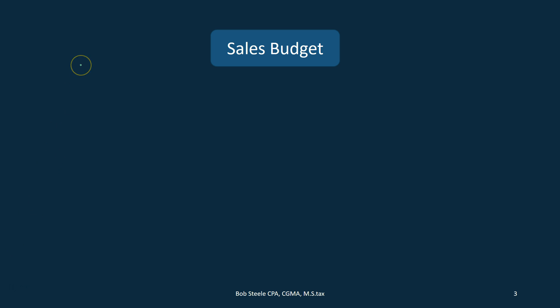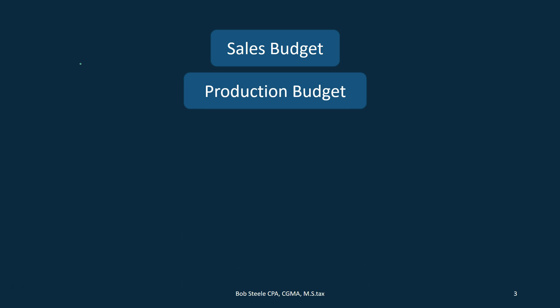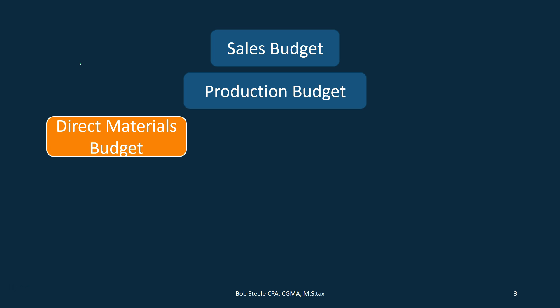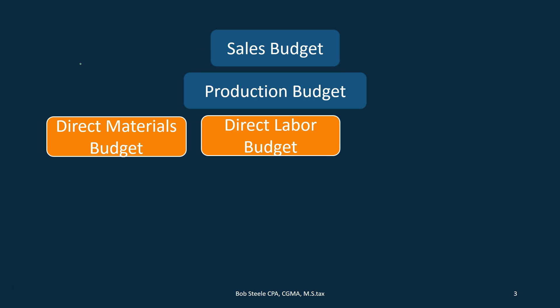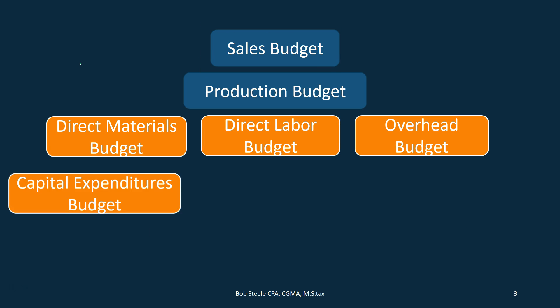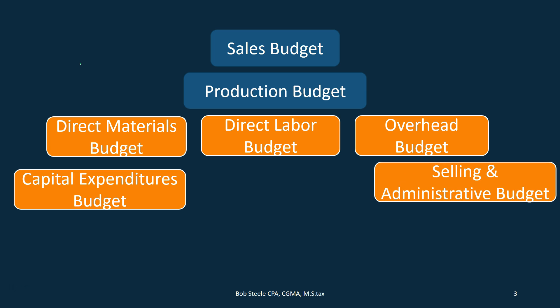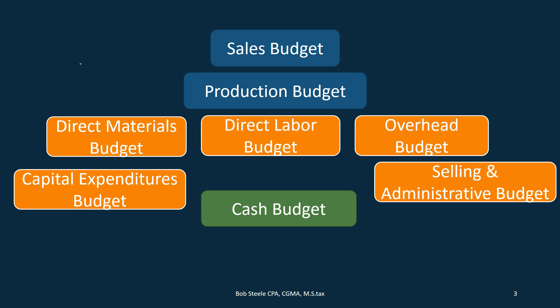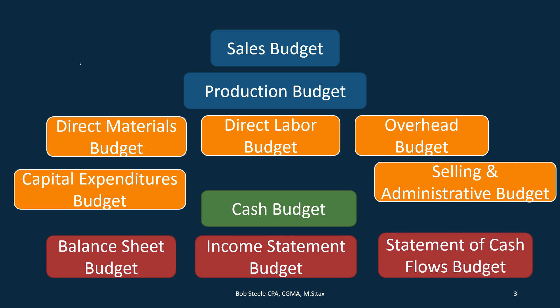Let's go through the process first. All these budgets tie together and we're going to do it in this order to get to our master financial statements — the budgeted income statement, the balance sheet, and the cash flow budget. We start with the sales budget, then the production budget for units to produce, then direct materials, direct labor, and overhead. We can also have the capital expenditure budget as well as the selling and administrative budget, then the total cash budget, and finally the budgeted income statement and statement of cash flows. This order is necessary because many steps must happen prior to another.